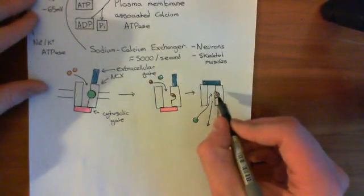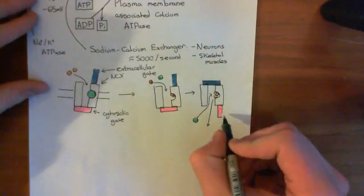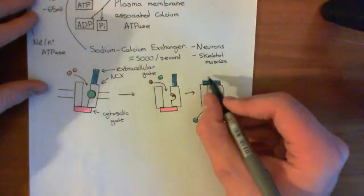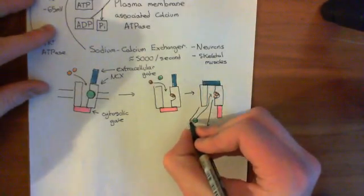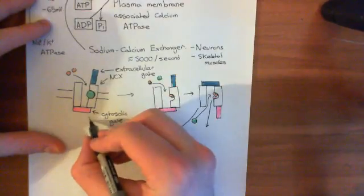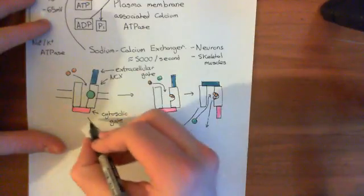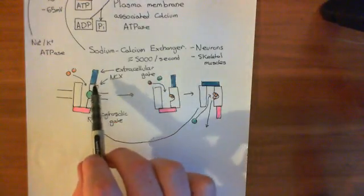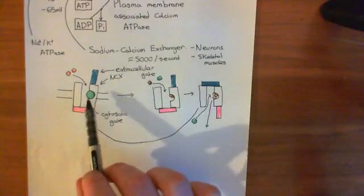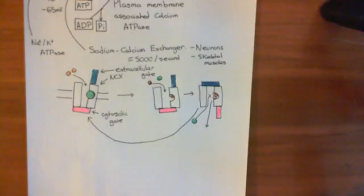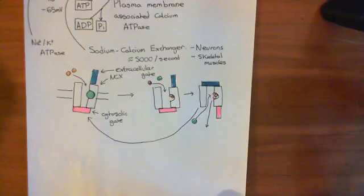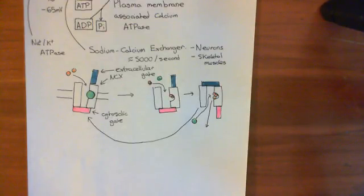When the calcium binds, it triggers another conformational change: the cytosolic gate closes and the extracellular gate opens, returning you to the original starting state — extracellular gate open, cytosolic gate closed, and a calcium ion bound to the binding site. This shows the importance of having two gates in the function of the sodium-calcium exchanger, which is really important for extruding calcium in tissues with very high transient calcium levels, such as muscle cells and neurons.